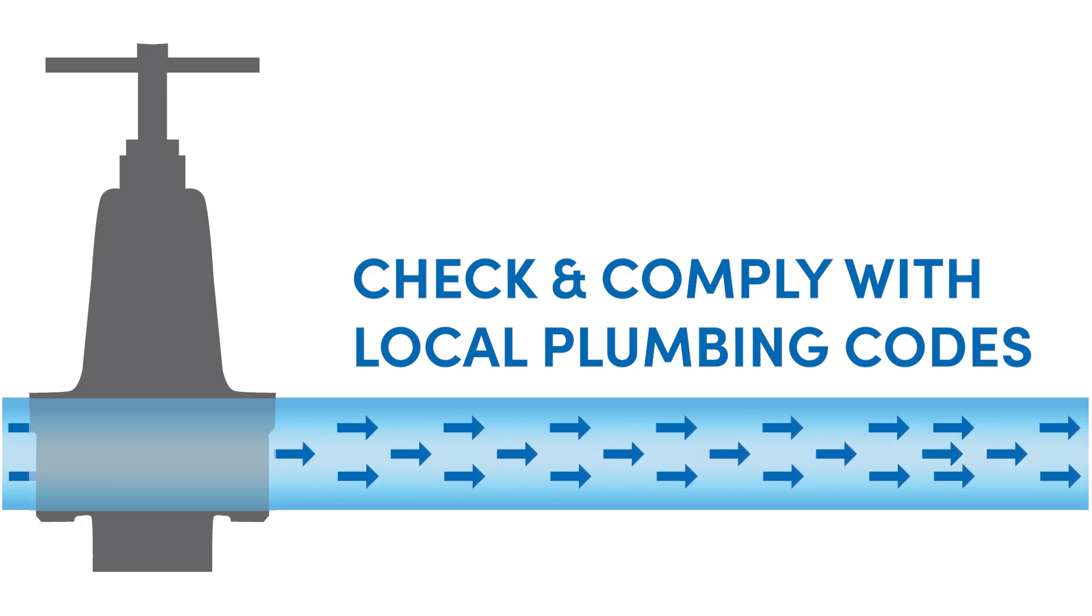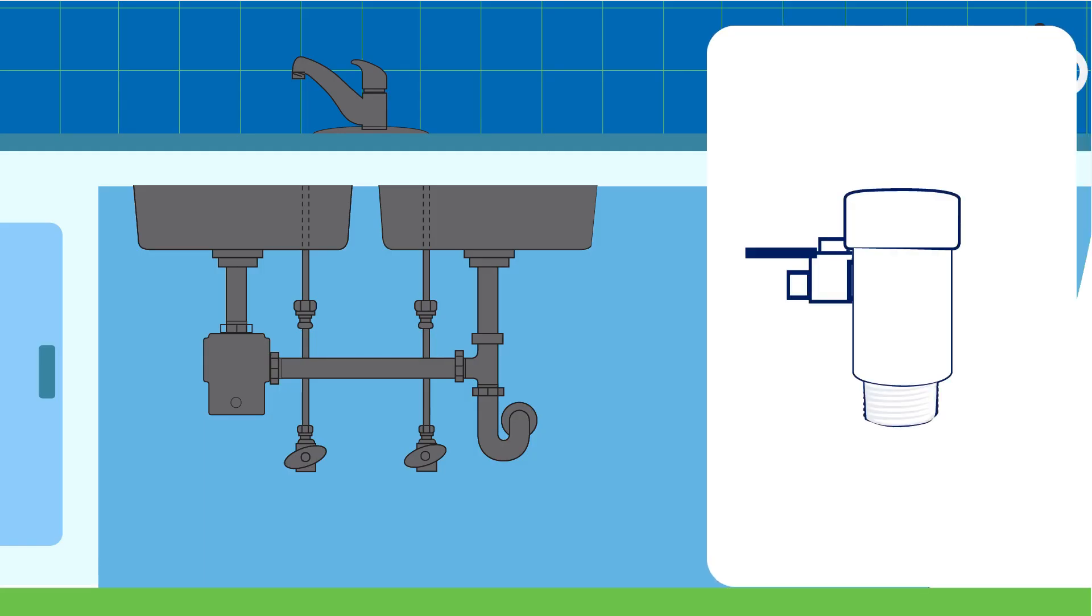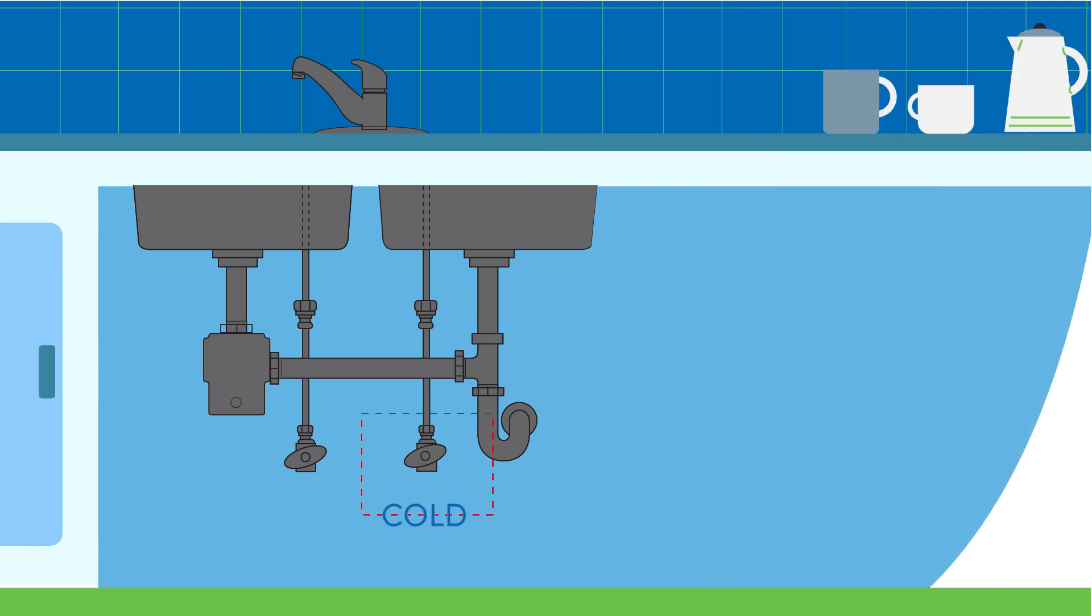Let's start by installing the water supply valve. First, identify the cold water supply line under the sink cabinet. Shut off the cold water supply valve, turn on the cold water tap to release pressure from the lines until water flow stops. Disconnect the cold water line from the angle stop valve and select the appropriate water supply adapter.